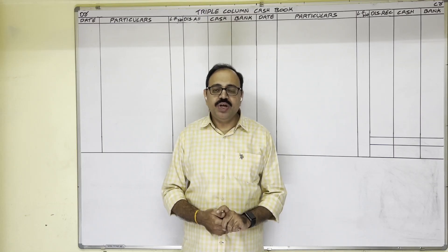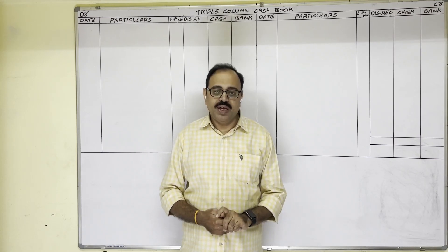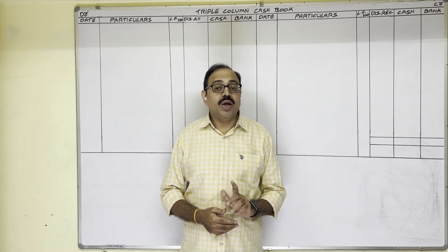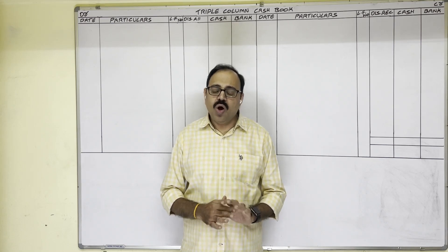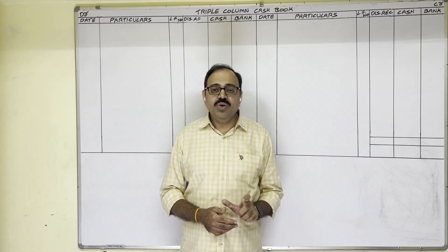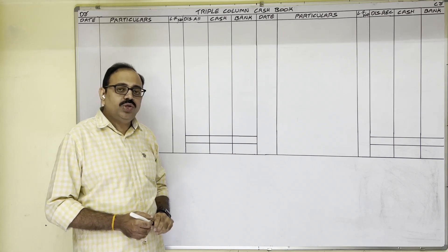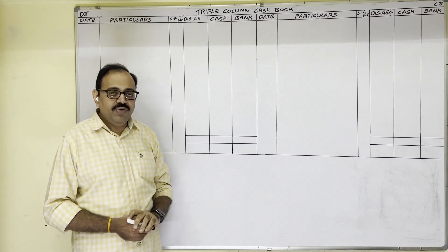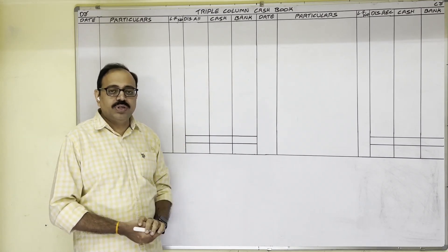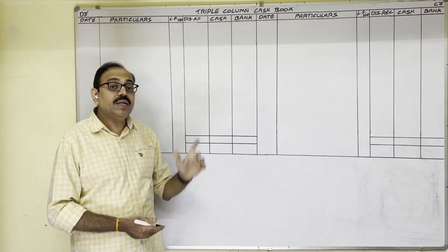Hello students, in this video I am going to explain the 16th problem from the triple column cash book topic. I am taking this question from the Telangana State Telugu Academy inter first year accounts textbook, but this video is useful to all commerce students. The triple column cash book can also be called a three column cash book, or a cash book with discount, cash and bank columns — all are the same.